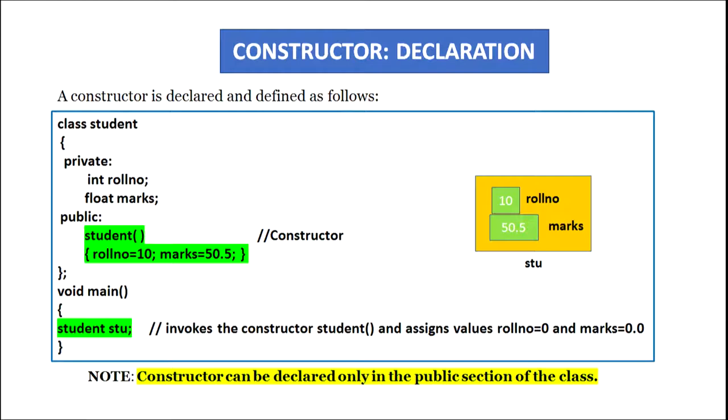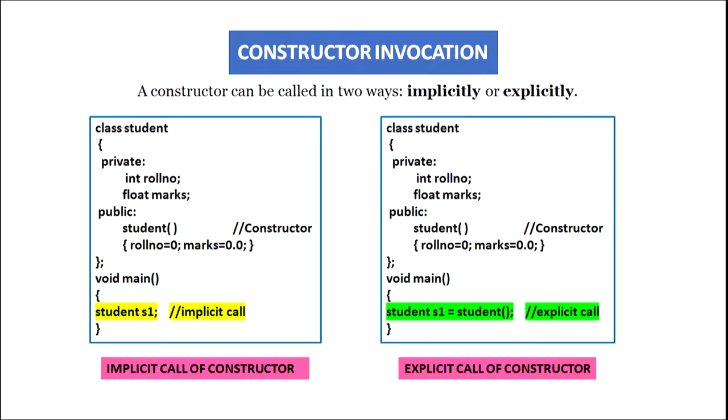It is very essential to note that constructors should be declared in the public section of the class. If they are declared in the private section, then the object won't be able to access or invoke it.